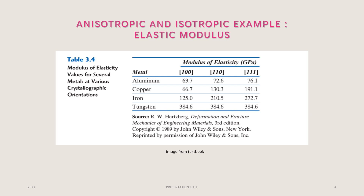Moving into anisotropic versus isotropic examples: an example of how this can be observed is with elastic modulus. This is again from our textbook. As you can see, there are four metals and their crystallographic orientation at which the modulus of elasticity was measured, in gigapascals.